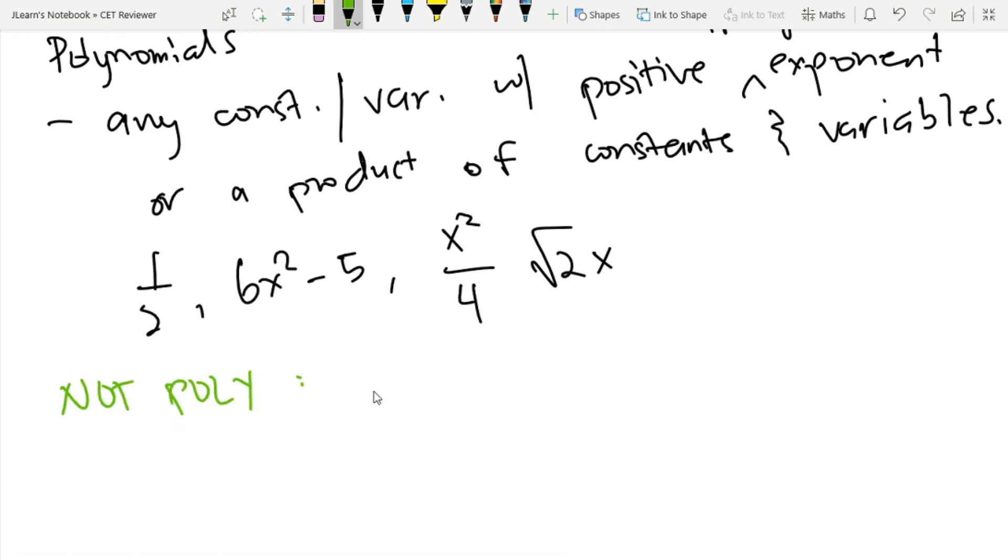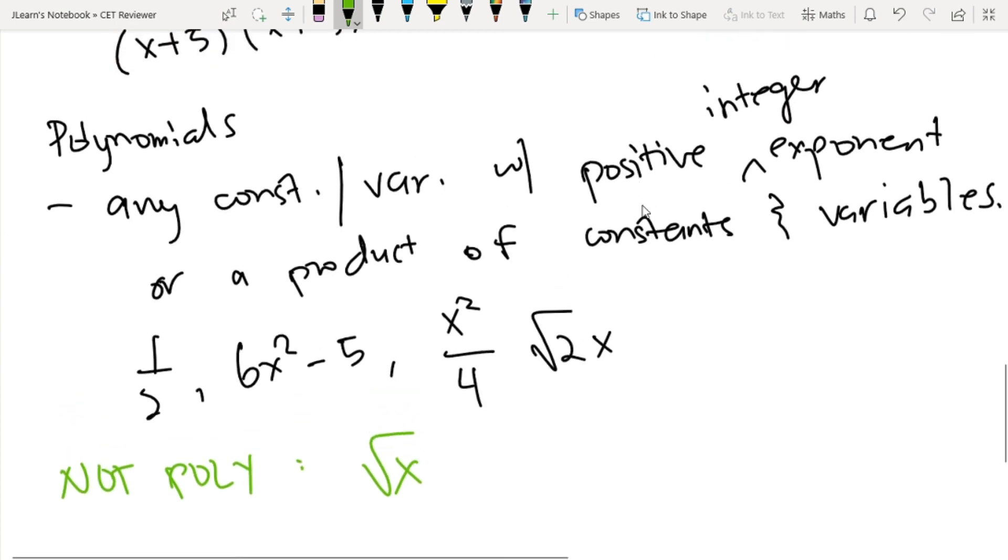So not poly ay let's say square root of x. Hindi natin na satisfy na kailangan na positive integer exponent. Kunyari let's say x to the minus 2 plus 7, hindi rin pwede yan. And then lastly kunyari square root of x plus 10, hindi rin pwede yan kasi yung x dito technically nasa loob sya na square root which hindi na integer yung exponent.